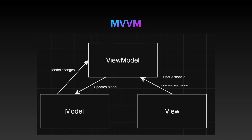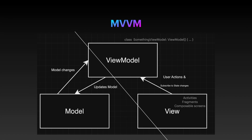On the other side, the view model updates the model, and the model informs the view model for changes. Everything on the right side is clear — we know what a view is: it's our fragment, activity, or composable. Then the view model — we also know it's the class that extends the Android ViewModel class, and we usually call it something ViewModel to identify it easily. However, on the left side we see the model, and this is not straightforward at all. If we research about model, we will get information like: model is the application state, the data structures, the business rules. The problem is that all these are not one class, not one responsibility, sometimes not even one module. We're talking about the most important part of our application, and we simply call it model when talking about MVVM.